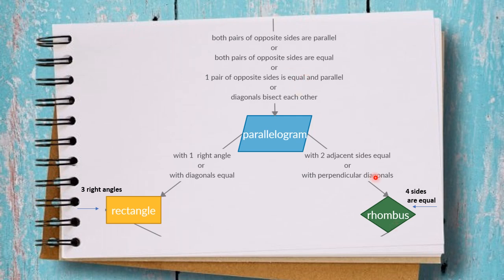We can also prove it is a rhombus by another way, starting directly from this statement: four sides are equal. We do not pass through the parallelogram stage — we just state that four sides are equal, and it is a rhombus.